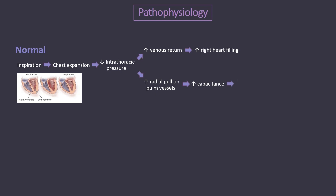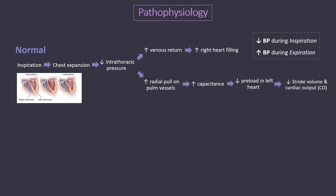Therefore, there is a drop in blood flow to the left heart. This decreases preload on the left, and consequently reduces stroke volume, and thus cardiac output. Normally, the resultant blood pressure drop is less than 10 mmHg. The opposite occurs during expiration. So you can infer now that systolic pressure normally decreases during inspiration and increases during expiration.